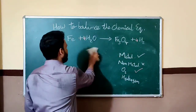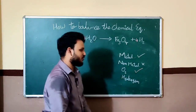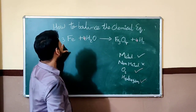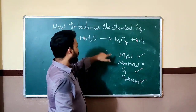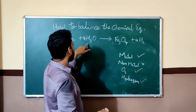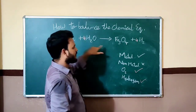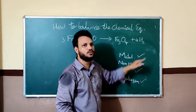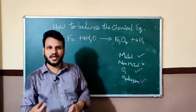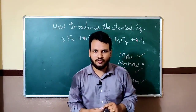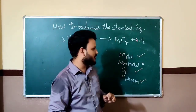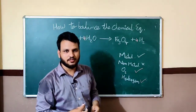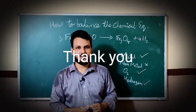Once again we check from the beginning: metal — 3 iron, balanced; non-metal — not available; oxygen — 4 on both sides; hydrogen — 8 on LHS and 8 on RHS. In this manner we have to balance unbalanced chemical equations. For each and every unbalanced equation, follow this pattern. That is all about how to balance chemical equations. Thank you.